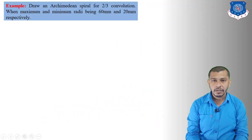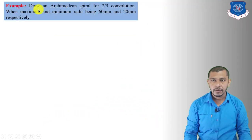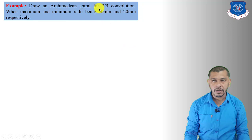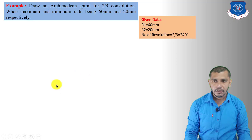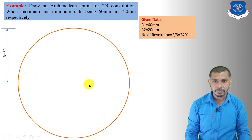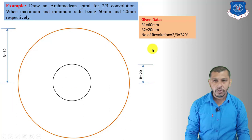Now let's move to another problem with different data: draw an Archimedean spiral for 2/3 convolutions when maximum and minimum radii are 60 mm and 20 mm respectively. Given: R1 = 60 mm, R2 = 20 mm, number of convolutions = 2/3, which equals 240 degrees. Draw a circle of radius 60 mm and another concentric circle of radius 20 mm.